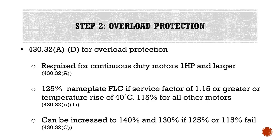Per 430.32C, these percentages can be increased to 140% and 130% respectively if 125% and 115% fail to carry the motor load. We would only know that after installing the motor with overload protection sized at 125% or 115% and finding it insufficient. Only under that circumstance can we go up to 140% or 130%, and in no circumstance can we exceed those values for overload protection.